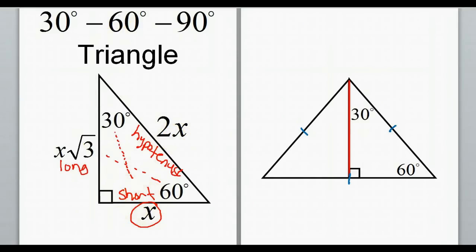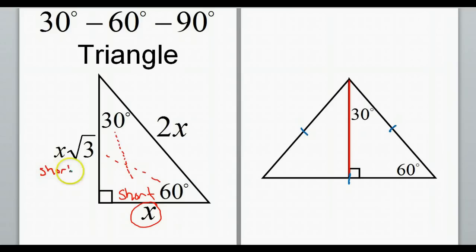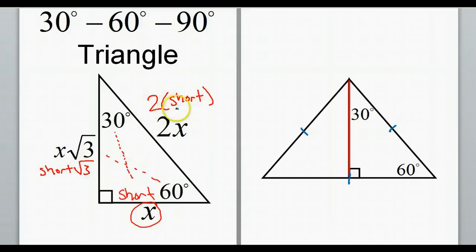Another way of looking at it: whatever the short leg is, the long leg will be short times radical 3, and the hypotenuse will be 2 times short. So it's short, short radical 3, and 2 short for the hypotenuse. Keep that in mind.